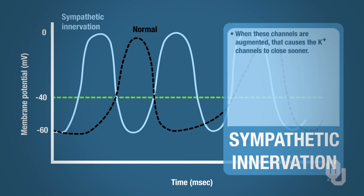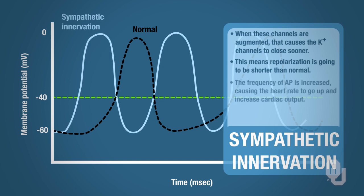When these channels are augmented and respond faster, the voltage-gated potassium channels close sooner because the funny channels are opening earlier than normal. This means repolarization is shorter than it normally would be — notice the shorter repolarization on the graph. By having a steeper slope for slow depolarization and a shorter repolarization, together we increase the frequency of these action potentials. When the frequency of action potentials increases, heart rate goes up, and cardiac output will increase.